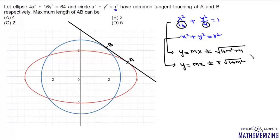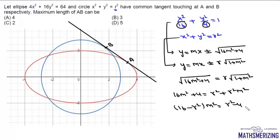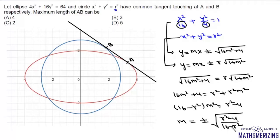Since we are talking about a common tangent, these two equations must represent the same line. So the constant terms must match: √(16m² + 4) = r·√(1 + m²). Squaring both sides gives 16m² + 4 = r² + r²m². Rearranging: (16 − r²)m² = r² − 4, so the slope m = ± √((r² − 4)/(16 − r²)).